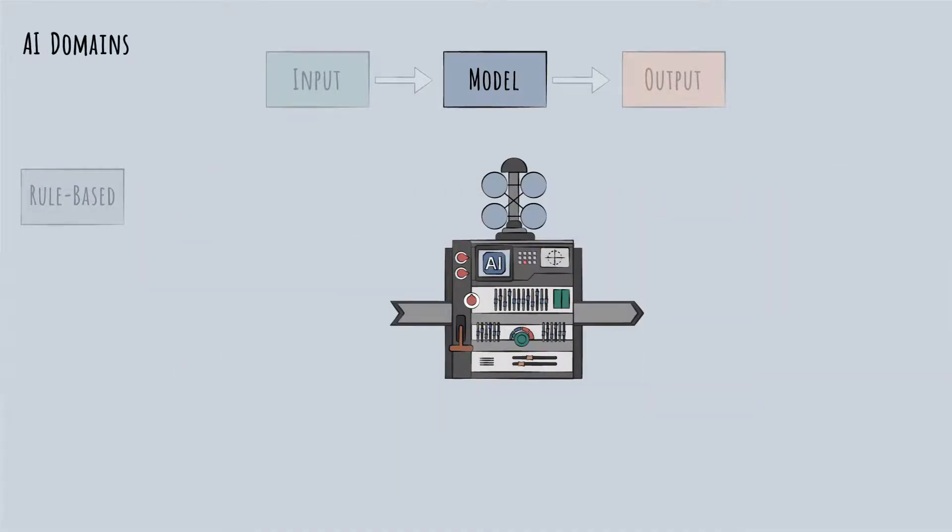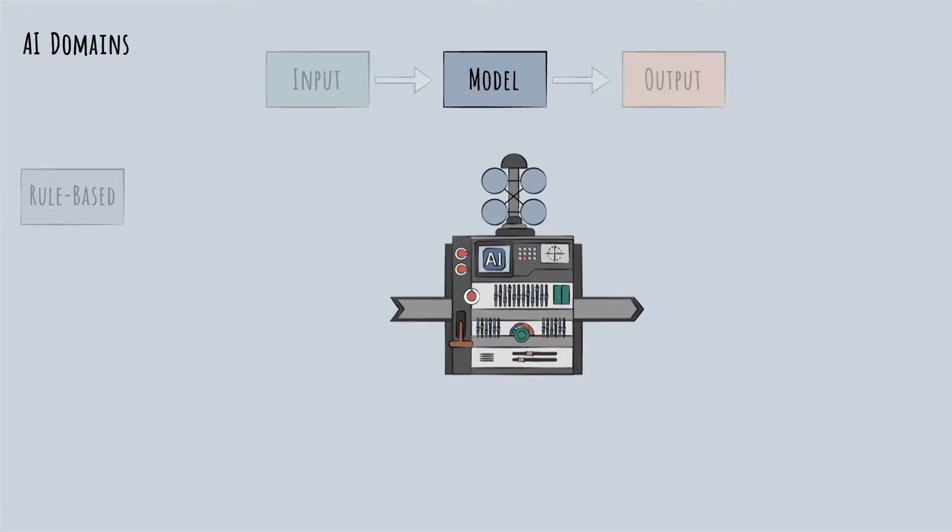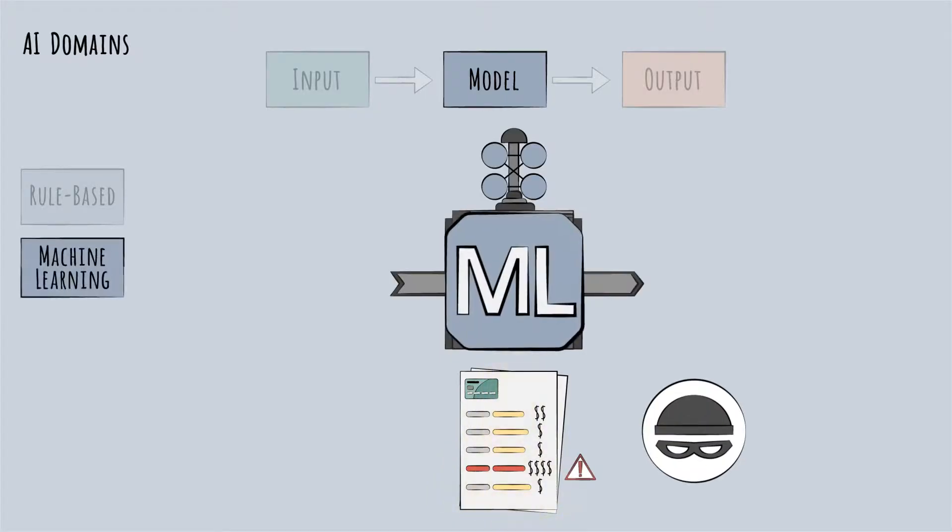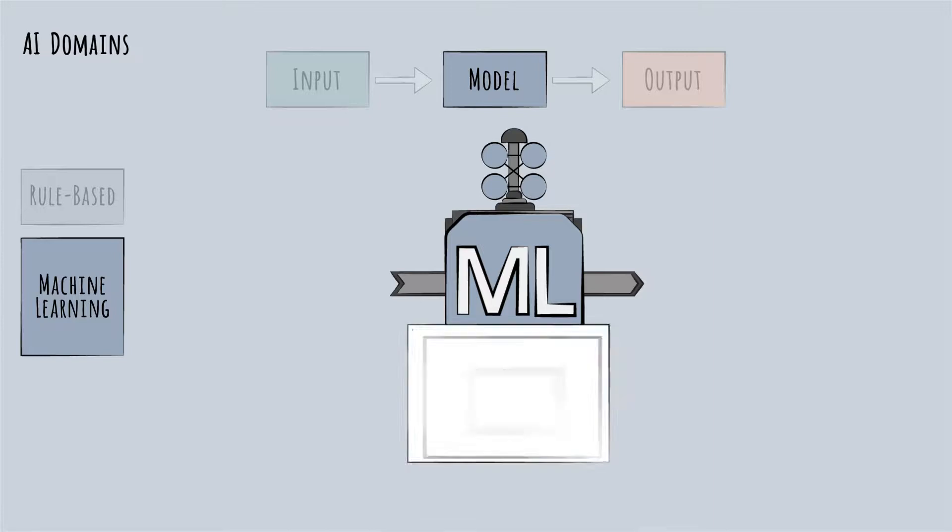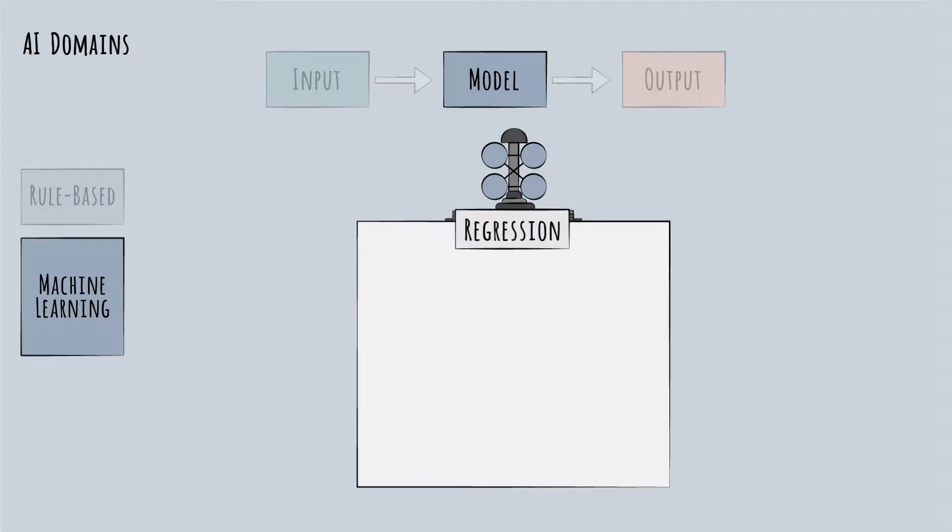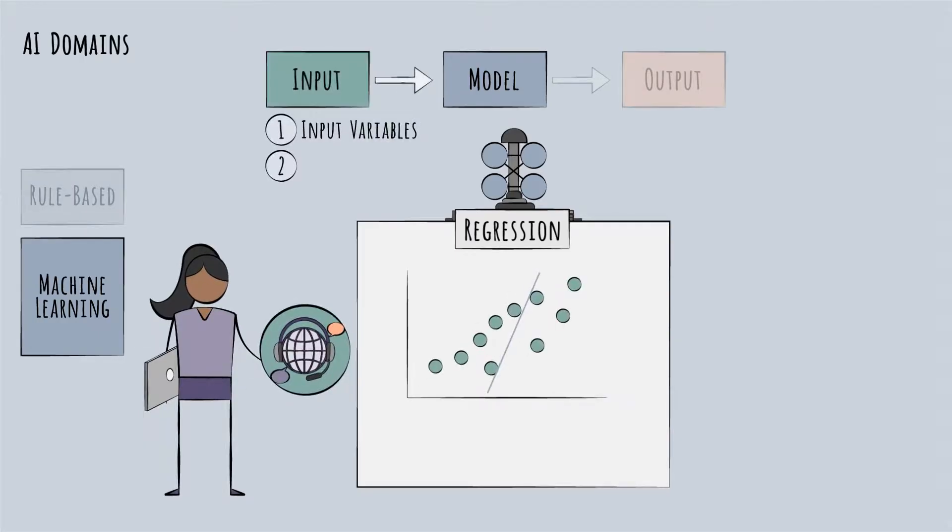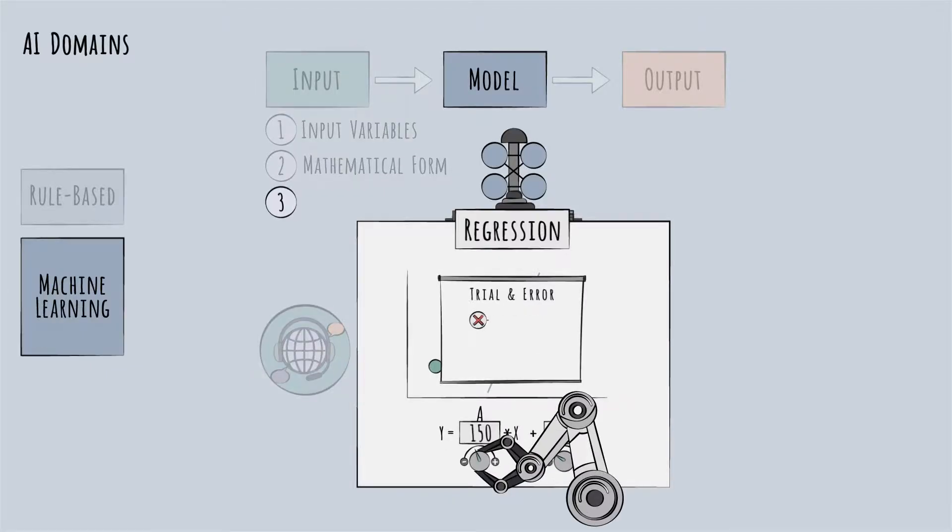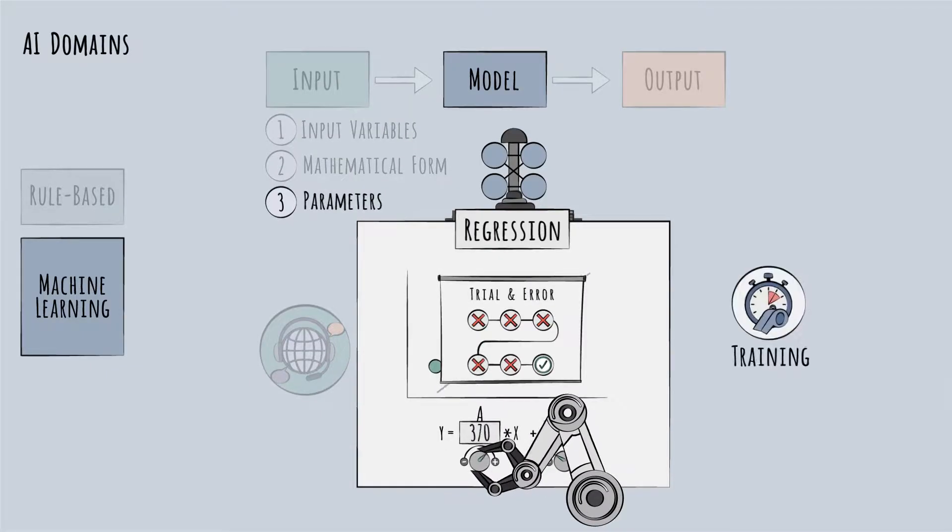So, a different type of model might be used instead, one that allows the machine to help determine which rules will best indicate fraud. This is the machine learning, or ML, vast domain covering hundreds or thousands of different model types. Just like in the regression example we reviewed, building an ML model in this case would involve three steps. Humans would complete the first two steps, choosing the input variables and mathematical form. The machine would then complete the third step, finding the optimal parameter value via a training process.